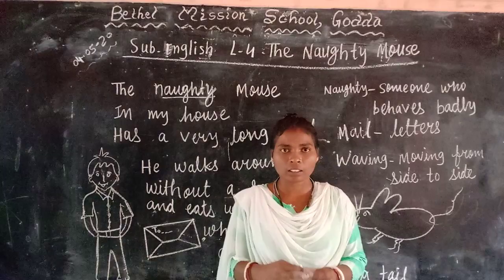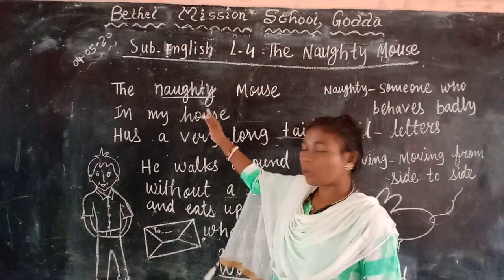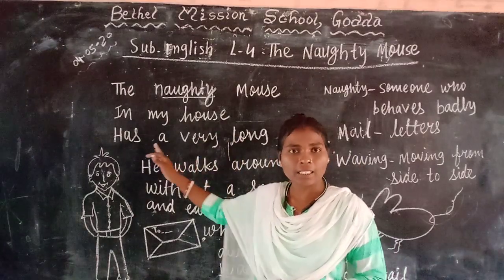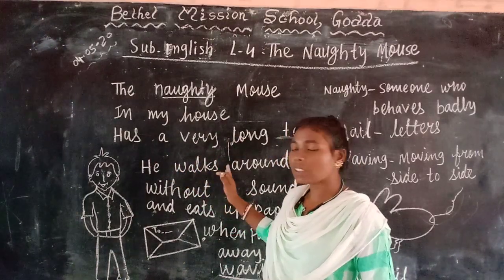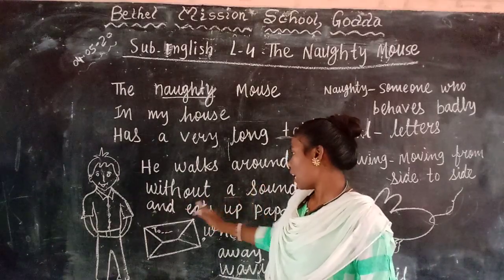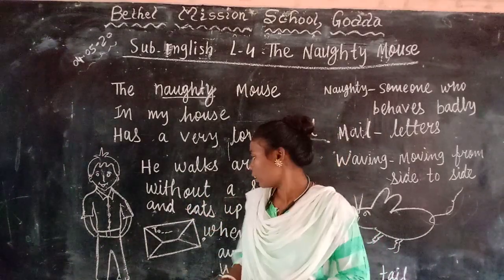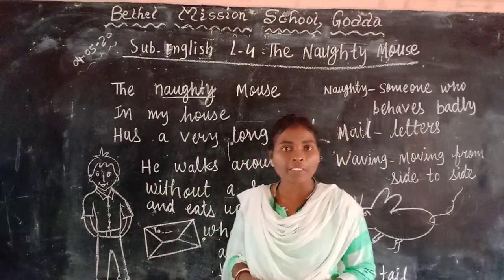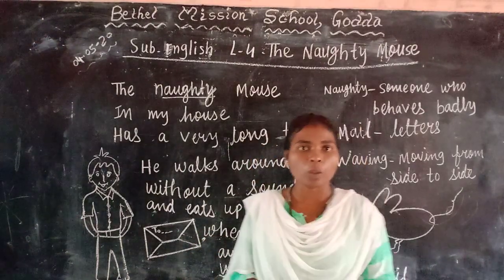Let me read the poem. The naughty mouse in my house has a very long tail. He walks around without the sound. And he is after Papa's name. When Papa comes, away he runs, waving his long tail.